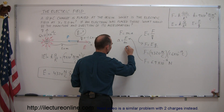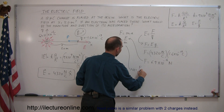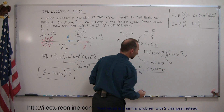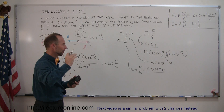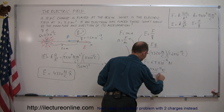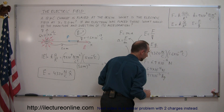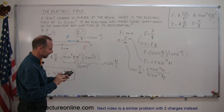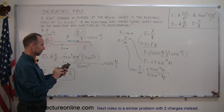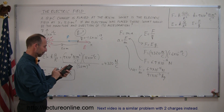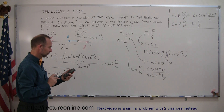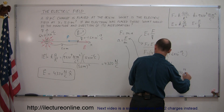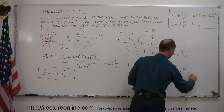Now we plug into Newton's second law: acceleration equals force divided by mass, which is 6.9 times 10 to the minus 16 newtons divided by the mass of an electron — 9.1 times 10 to the minus 31 kilograms. If you don't remember the electron mass, you can look it up in the back of your textbook. Dividing gives an acceleration of 7.6 times 10 to the 14 meters per second squared.